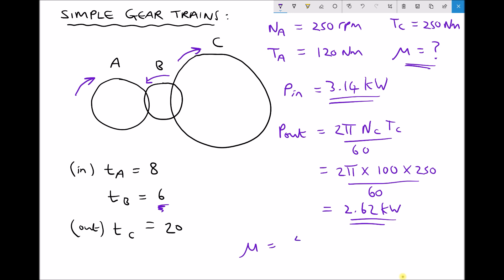Because we have our output power 2.62 divided by our input power 3.14 and we times that by 100 to get a percentage, giving us 83.4 percent.